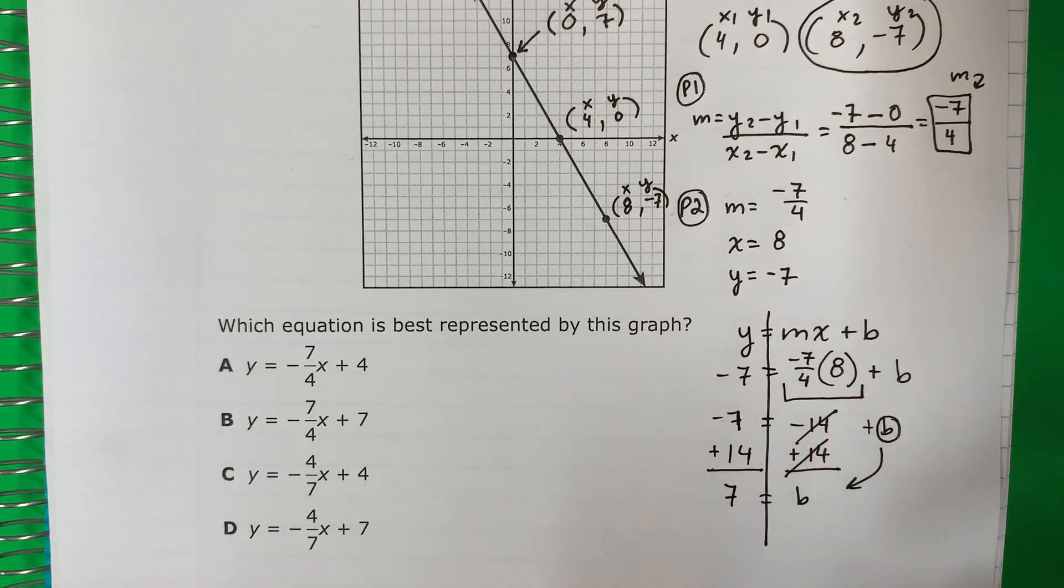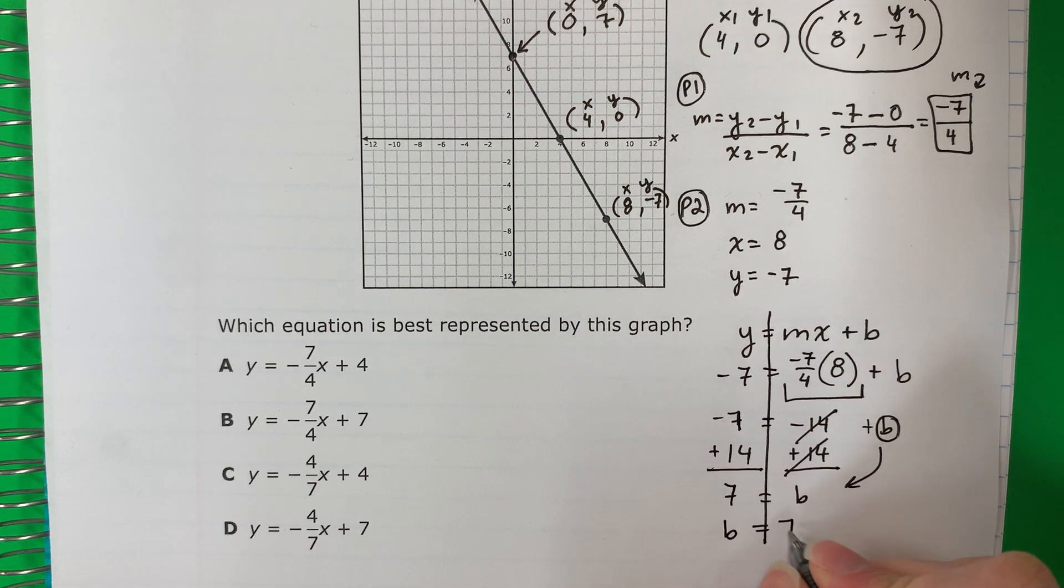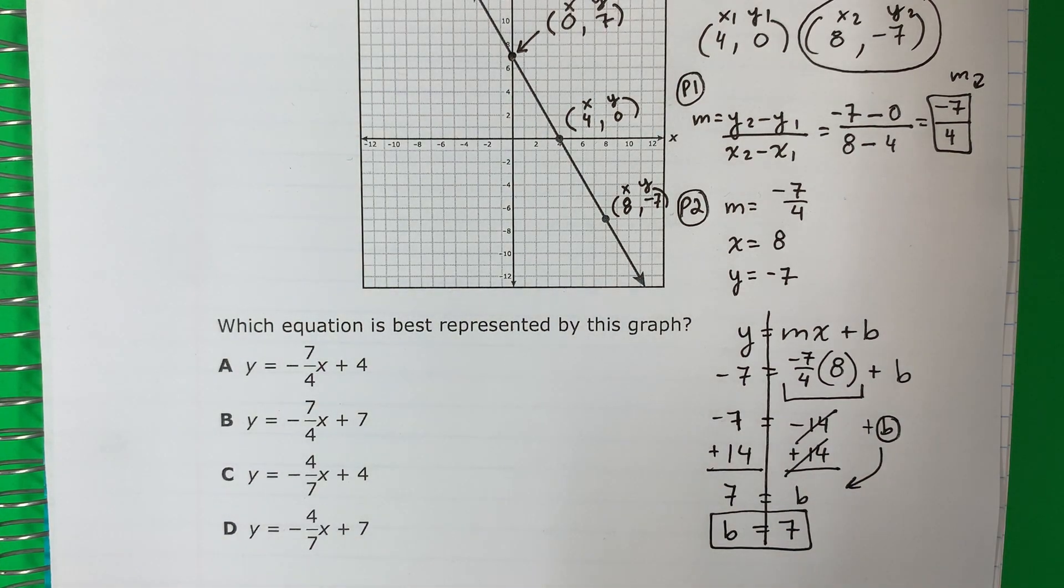Seven. Positive seven. And we're going to switch. B equals seven.